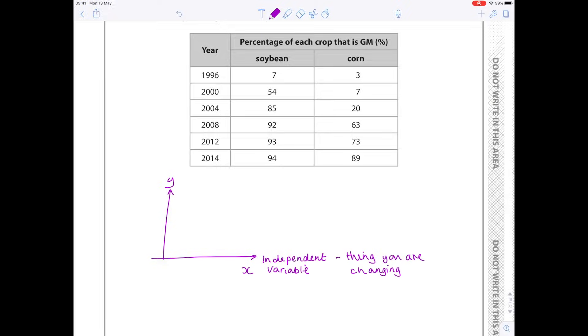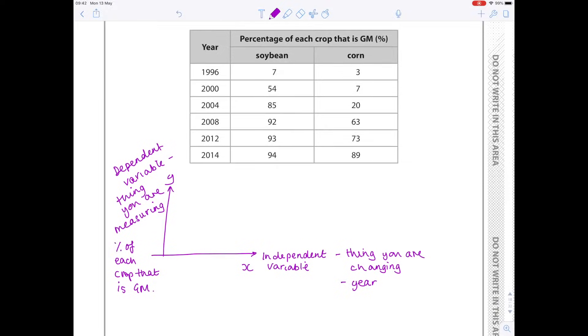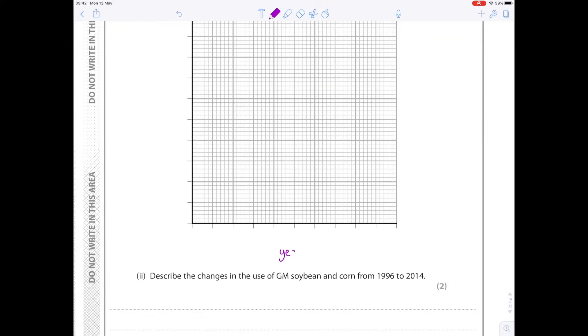You need to know that the thing that you are changing, so the independent variable, goes on the x-axis. So what are we changing here? Well we're changing the year that we're examining, we're going from 1996 all the way through to 2014. So in this case it will be the year. And then on the y-axis goes your dependent variable, which is the variable that you are measuring. What am I measuring here? Well I'm measuring the percentage of each crop that is GM. Use that variable song on YouTube to help you if you can't remember the independent and dependent variables.